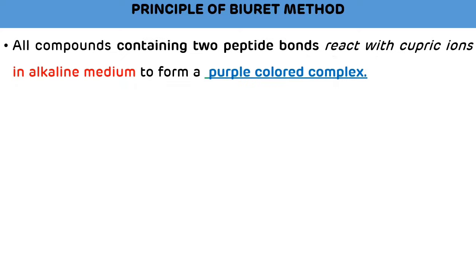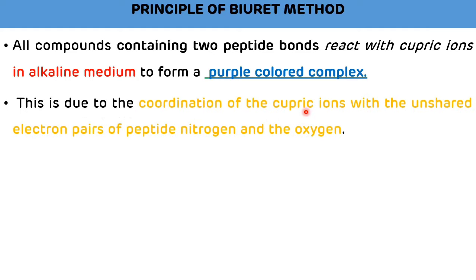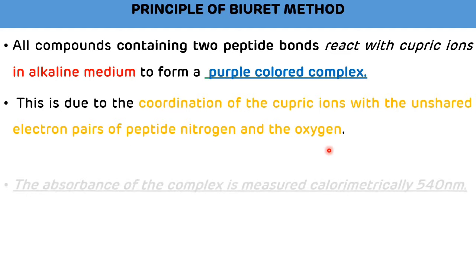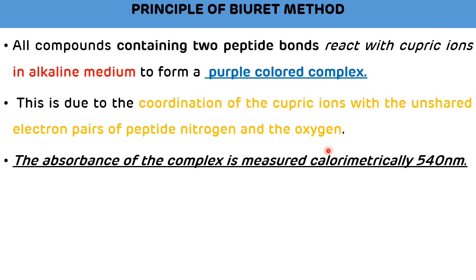Principle of biuret method for total protein estimation: all compounds containing two or more peptide bonds react with cupric ions in alkaline medium to form a purple color complex. This is due to the coordination of cupric ions with the unshared electron pairs of peptide nitrogen and oxygen. The absorbance of the complex is measured colorimetrically at 540 nm wavelength.